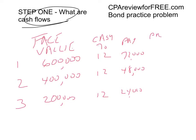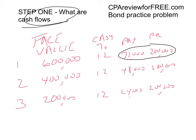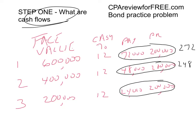You also make principal payments because it's a serial bond: $200,000 at the end of each of the three years. So the total cash payment in year one is $272,000 ($72,000 interest plus $200,000 principal). In year two it's $248,000 ($48,000 interest plus $200,000 principal). And in year three it's $224,000 ($24,000 interest plus $200,000 principal). No matter what you sell the bond for, these are the cash payments required by the bond contract.